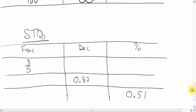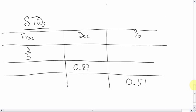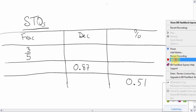Anyways, here's your skill testing questions. If you could do these. Three-fifths, 0.87, 0.51. Good luck with that. Talk to you later. Bye.